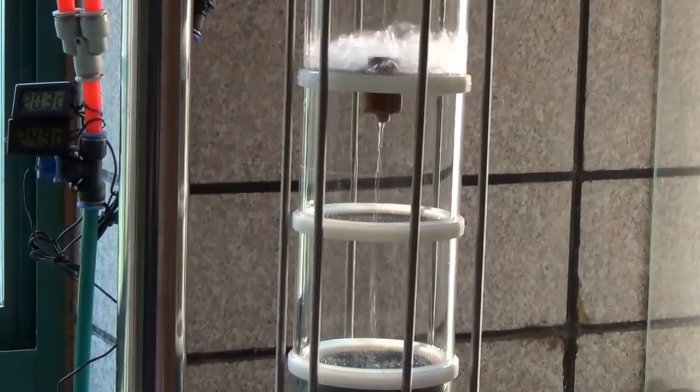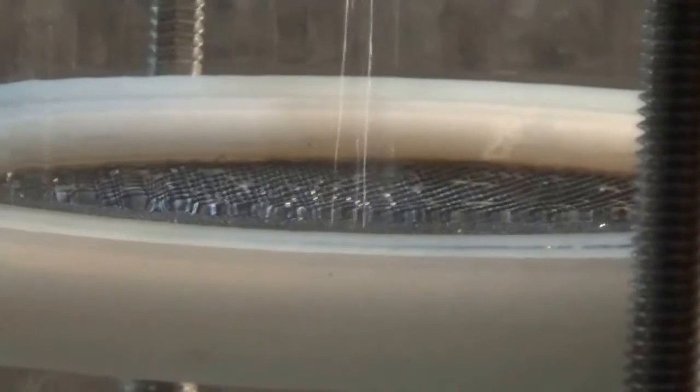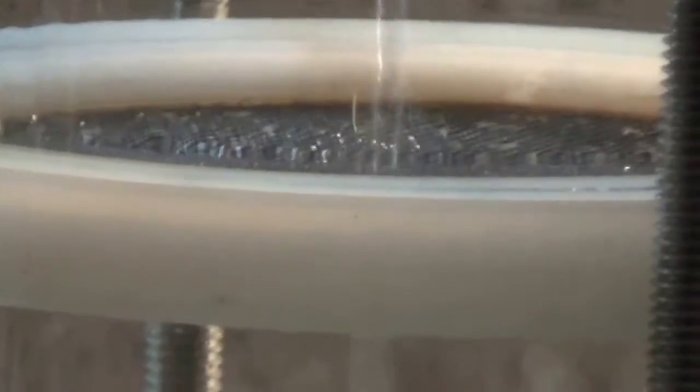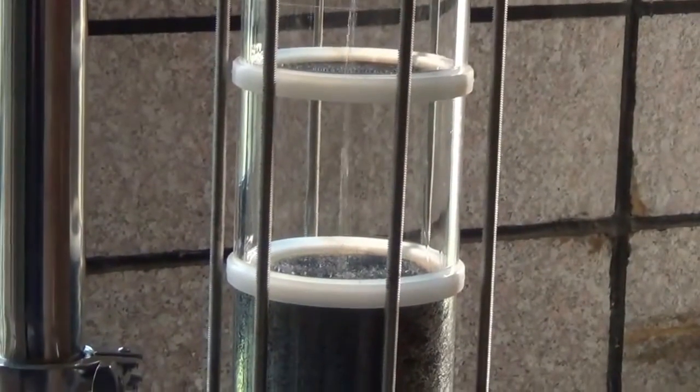Above that is a 4 inch filter disk. I was hoping it would break the stream up a little more, but as you can see it doesn't really. It just goes pretty much straight through.